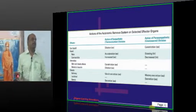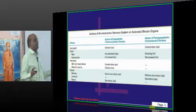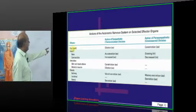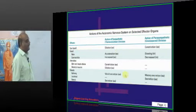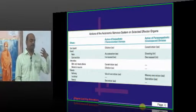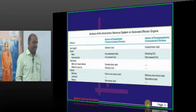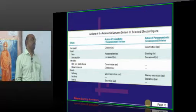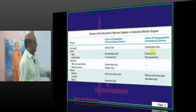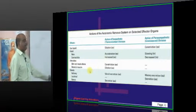An important question is how sympathetic and parasympathetic differ in their effects. When you are angry, your pupils dilate — this is because the sympathetic system causes mydriasis, pupil dilation. In contrast, the parasympathetic system causes miosis, constricting the pupil.